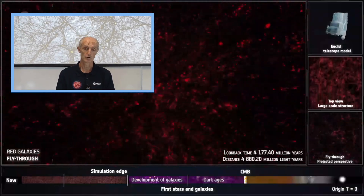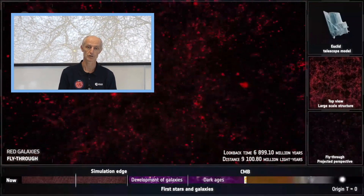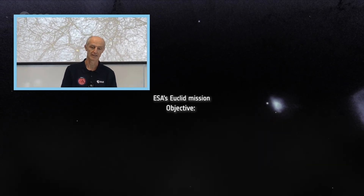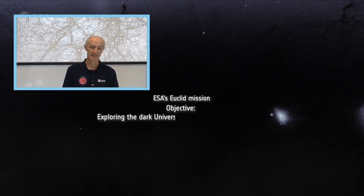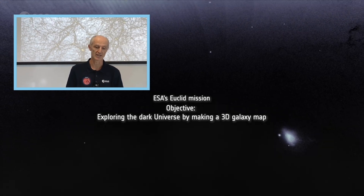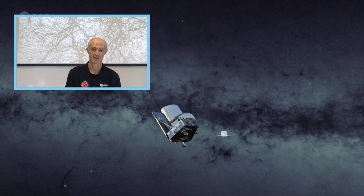For this, we are going to use what we currently have and also develop a new simulation that will simulate what Euclid will observe in the deep surveys, which will go deeper than the wide survey that covers one-third of the sky. This has been a tremendous effort, very rewarding, and it will be very useful to analyze the Euclid mission data.